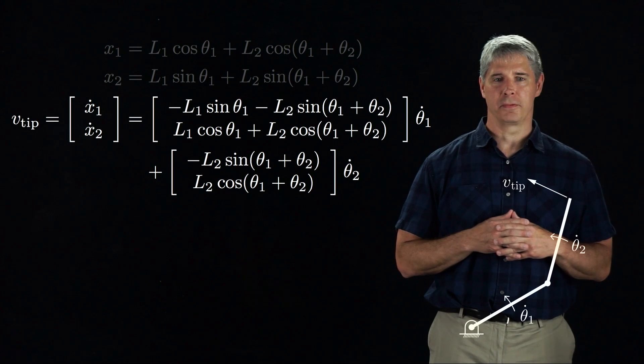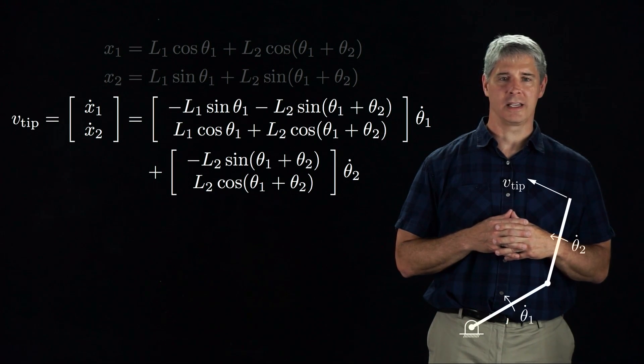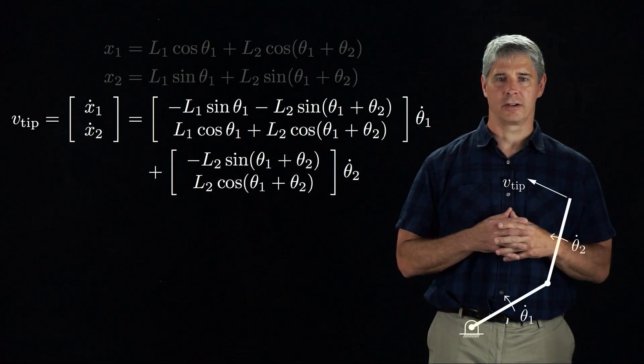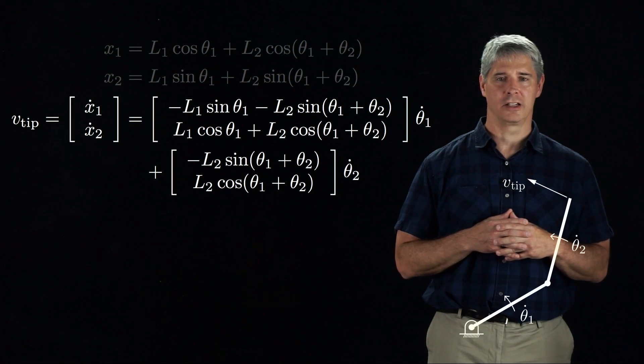Notice that the vector equation can be written as a vector times the velocity of the first joint, theta 1 dot, plus another vector times the velocity of the second joint, theta 2 dot.